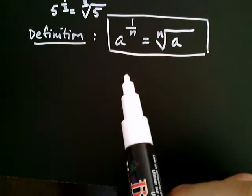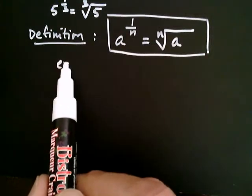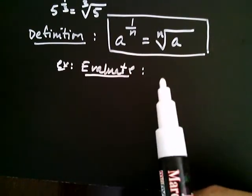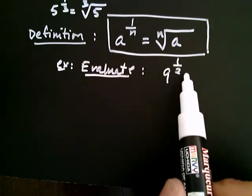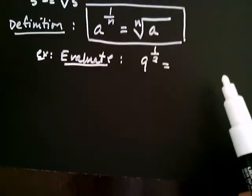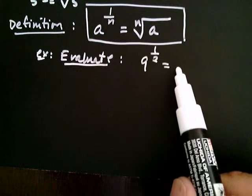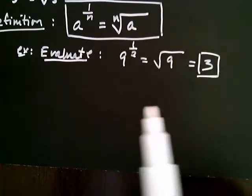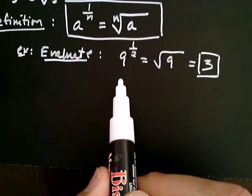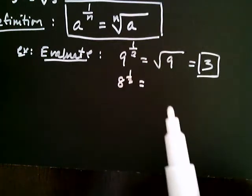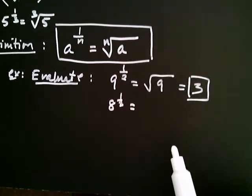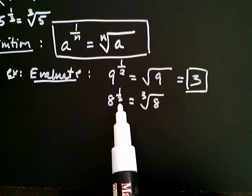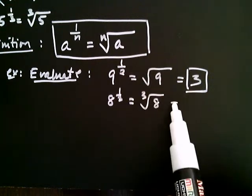Now we have a way of dealing with rational exponents. For example, let's say you wanted to evaluate nine to the one half. Our definition says you make the denominator the index, so in this case it's the square root of nine, and the square root of nine is equal to positive three. Taking another one: let's say you had eight to the one third. In that case it's going to be the cube root of eight — because the three, the denominator, became the index — and the cube root of eight is equal to positive two.